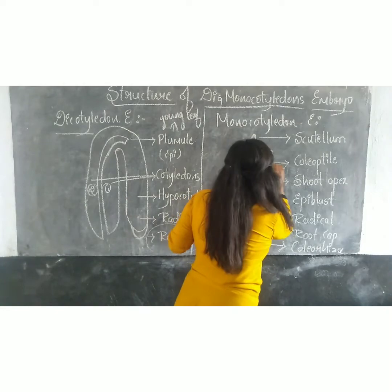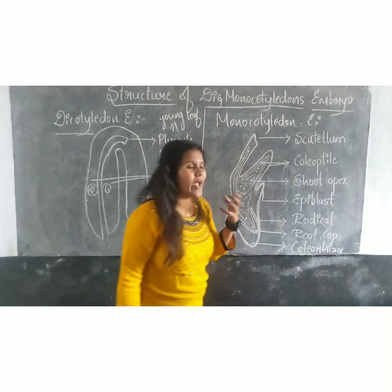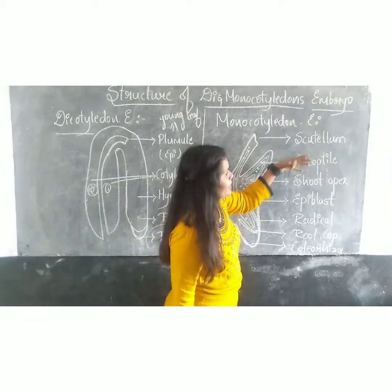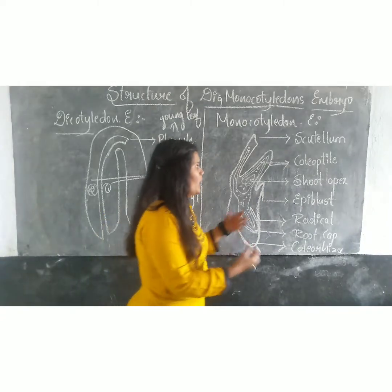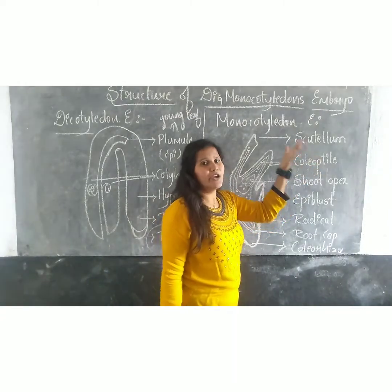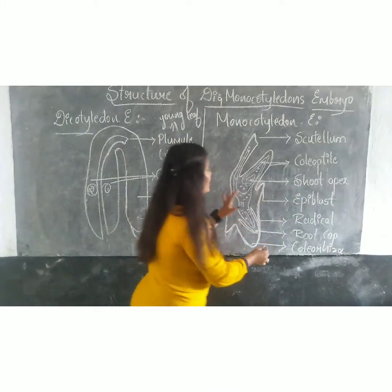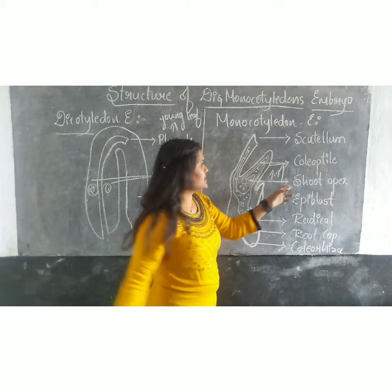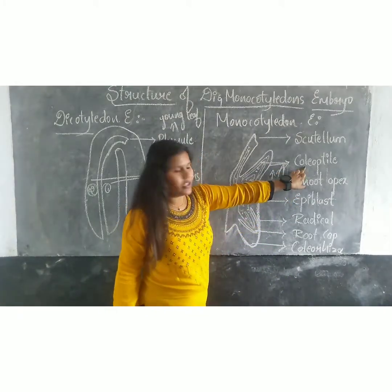Coming to the colletile — what is this colletile? This is the structure where it protects the upper or the shoot. It terminates the shoot development, or it is the growing tip of the shoot. Coming to this shoot apex, where the shoot leaves are produced from here. So this is terminated or protected by the colletile.